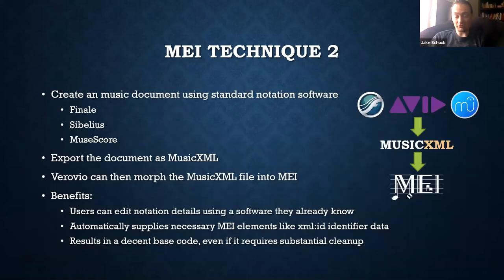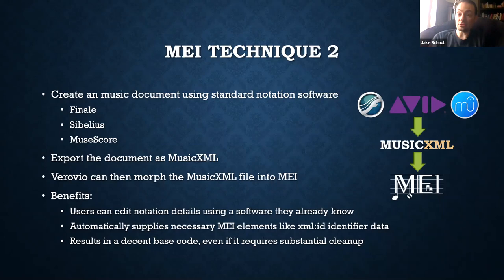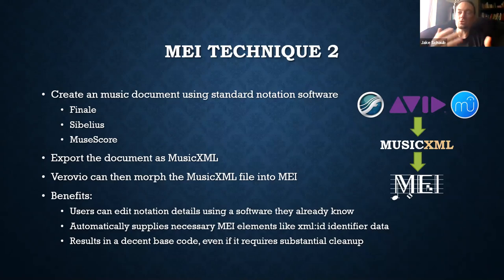A second technique, more prevalent in the field, is to create a music document using regular notation software — usually Finale, Sibelius, or MuseScore — and Blair students have mastered at least one of these. You can then export it as MusicXML and convert that to MEI. This is great because you don't have to learn a new notation system, unique identifiers are provided automatically, and it gives you a good base code even if you have to clean it up a bit.